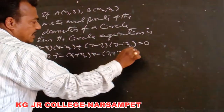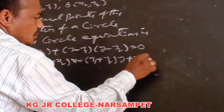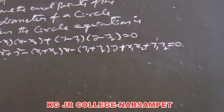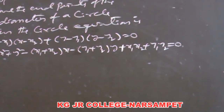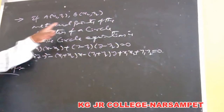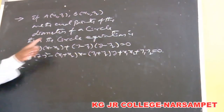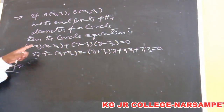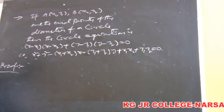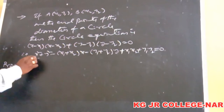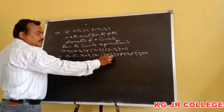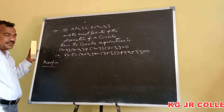Now the proof of this statement. Students, x1, y1 and x2, y2 are the end points of the diameter of a circle. Then the circle equation is (x − x1)(x − x2) + (y − y1)(y − y2) = 0. Or by simplification: x² + y² − (x1 + x2)x − (y1 + y2)y + x1·x2 + y1·y2 = 0.